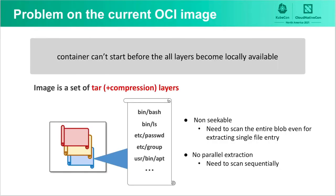The root cause of this issue is the current OCI images. In these images, each rootFS layer is formatted as tar and optionally plus compression. Tar is not seekable and cannot perform parallel extraction. So when we start a container, we first need to download the entire image contents to the node, then extract each layer sequentially. If the image is large, starting up the container will take long.